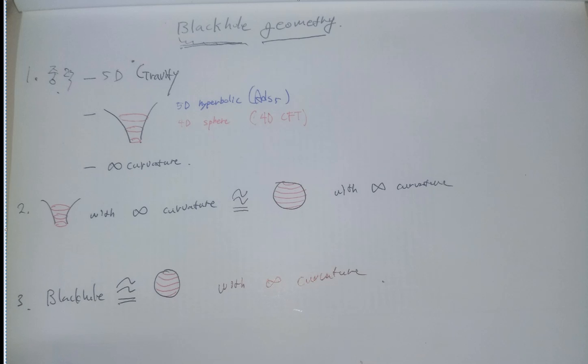First, black hole has five-dimensional gravity, which is expressed like this way. So this five-dimensional hyperbolic is gravity. Five-dimensional gravity, and this is written as ADS-5.